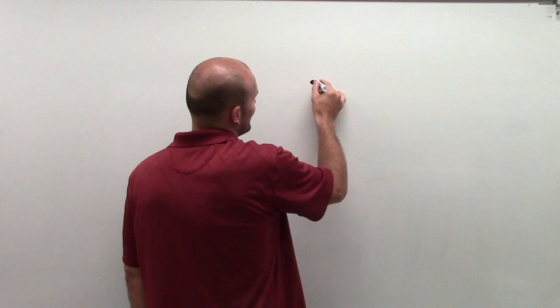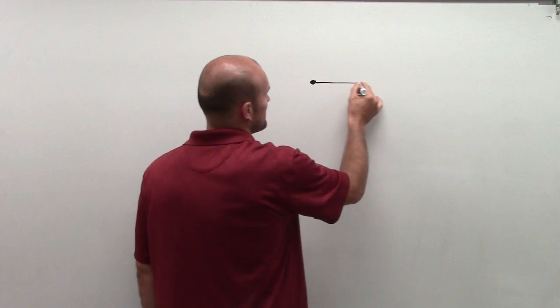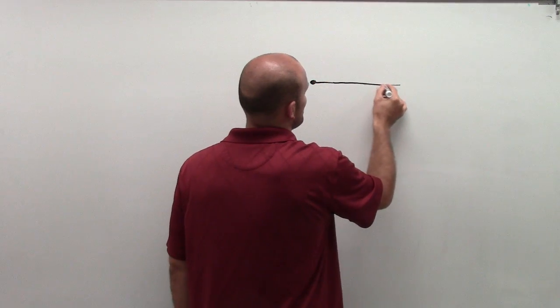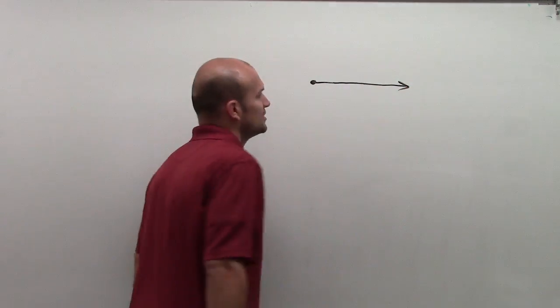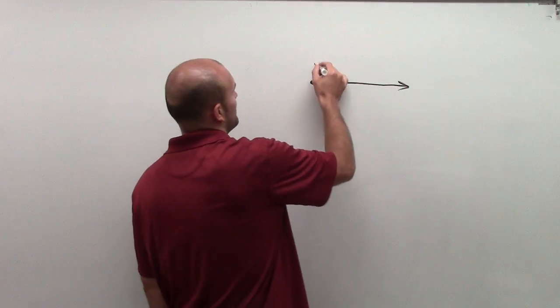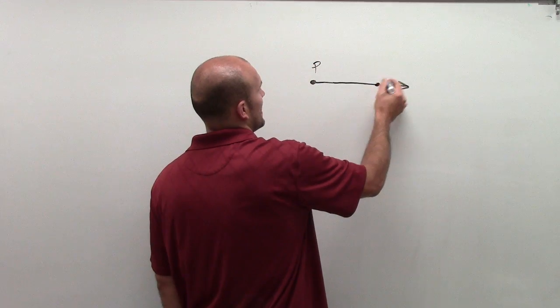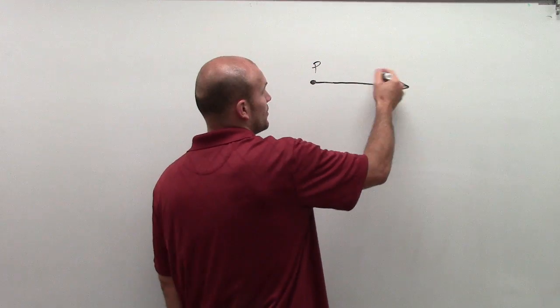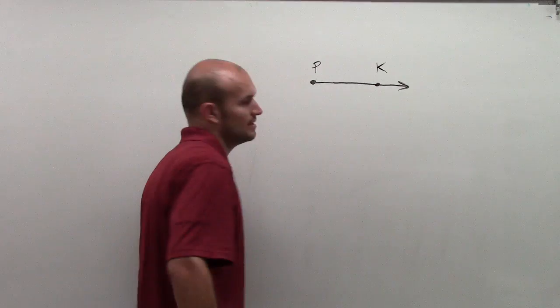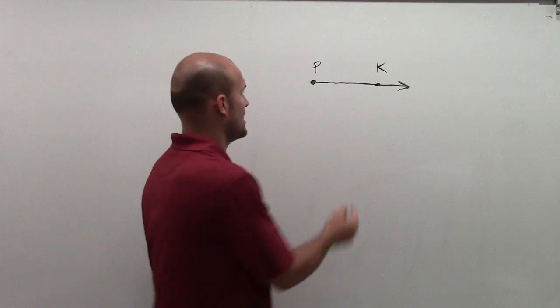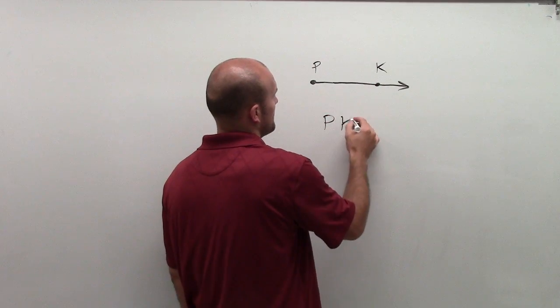A ray has an endpoint, and then it goes infinitely in one direction. So let's call the endpoint P, and let's say it goes through a second point K. Now, it goes infinitely in that direction. So I have the ray P, K.